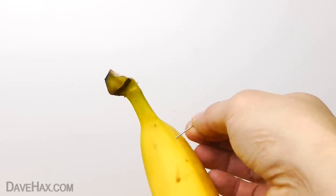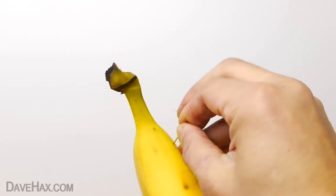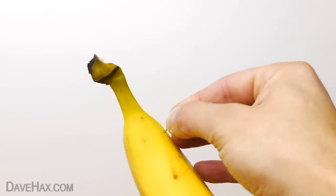Then move it back and forth left and right like this. This is actually slicing the fruit underneath the skin.